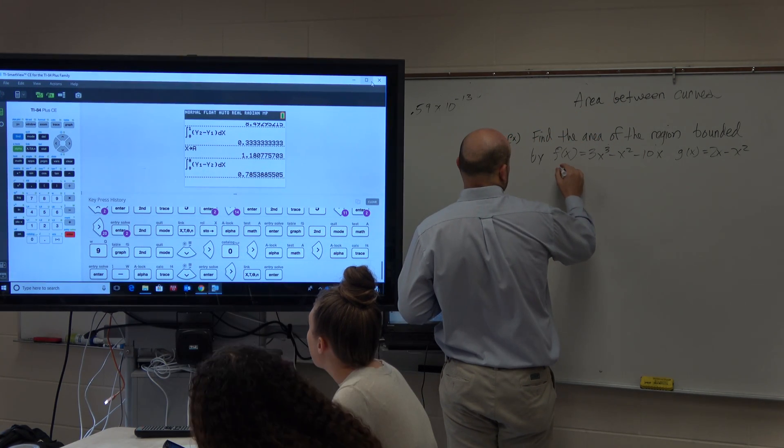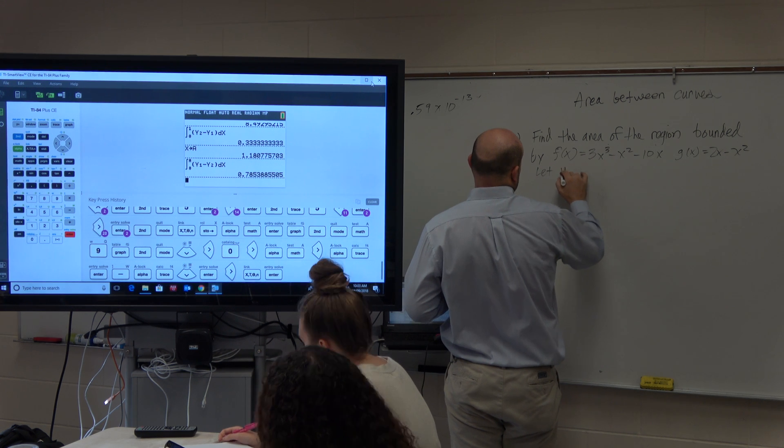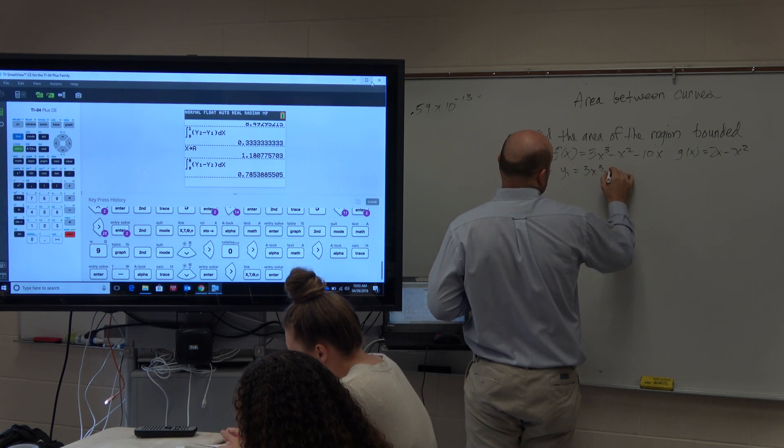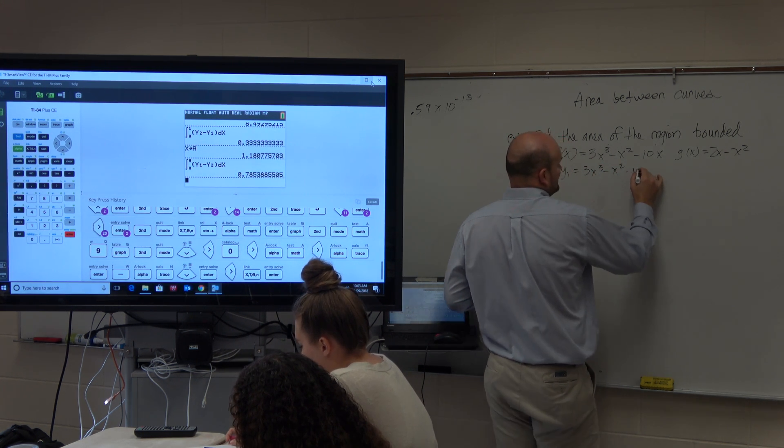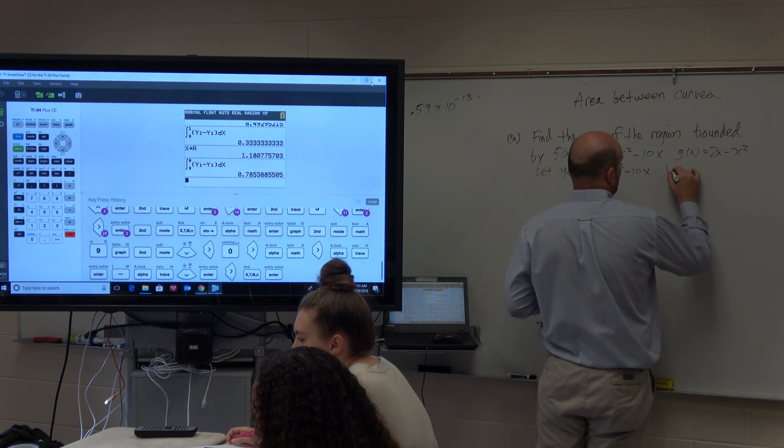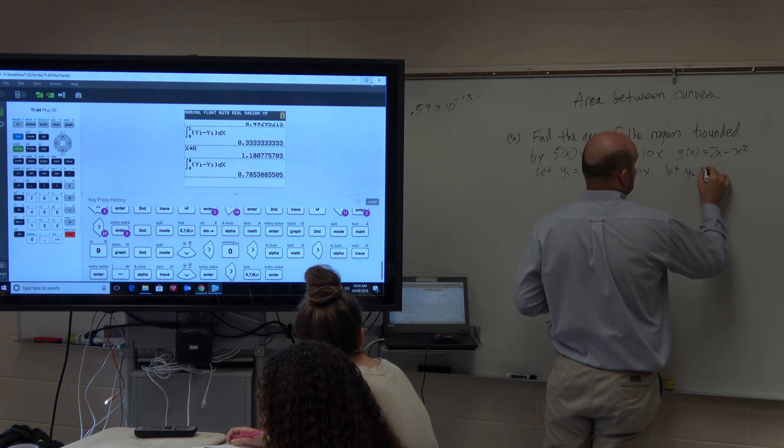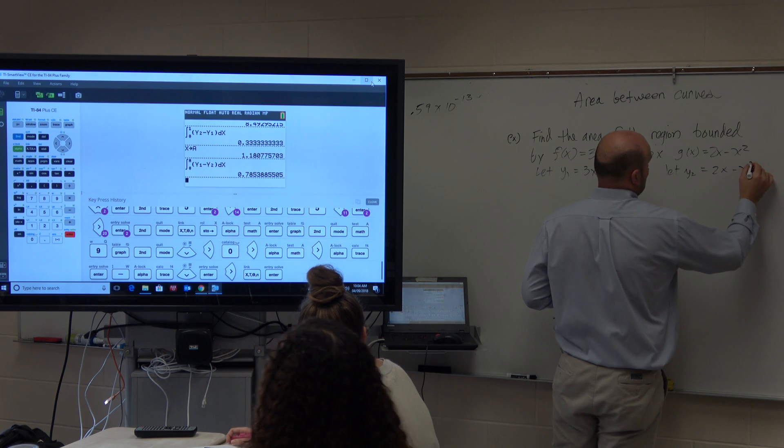First thing, I'm going to say let y1 equal 3x cubed minus x squared minus 10x. And let y2 equal 2x minus x squared.